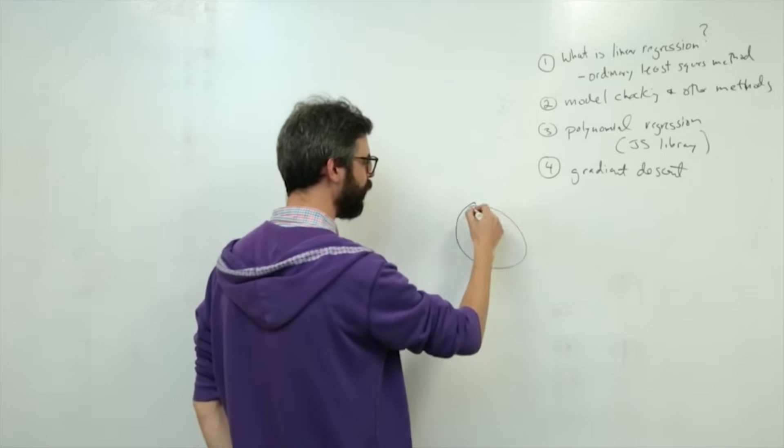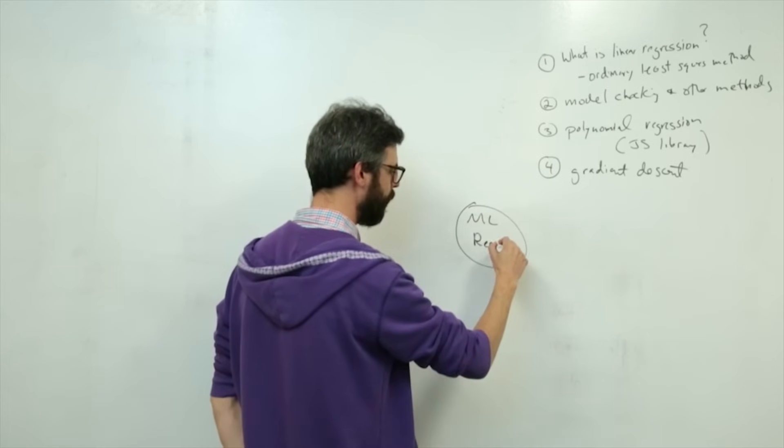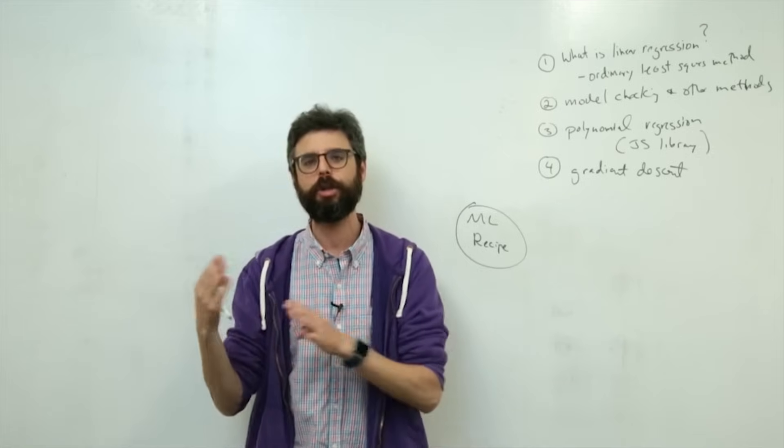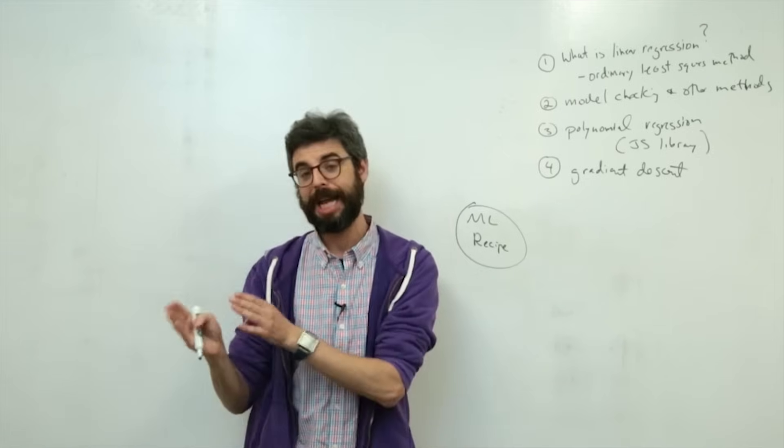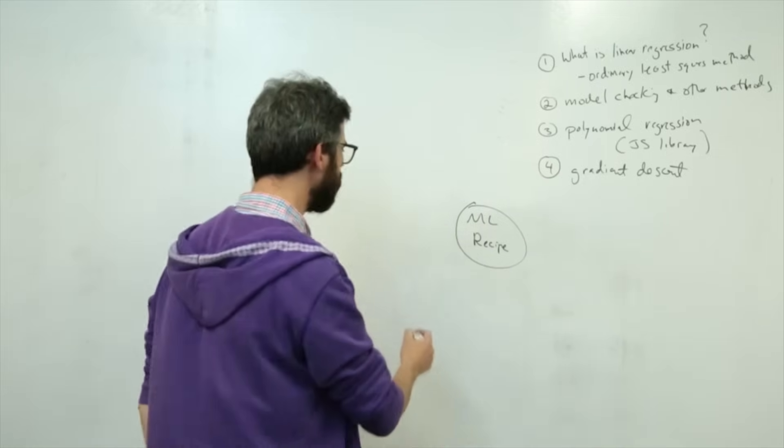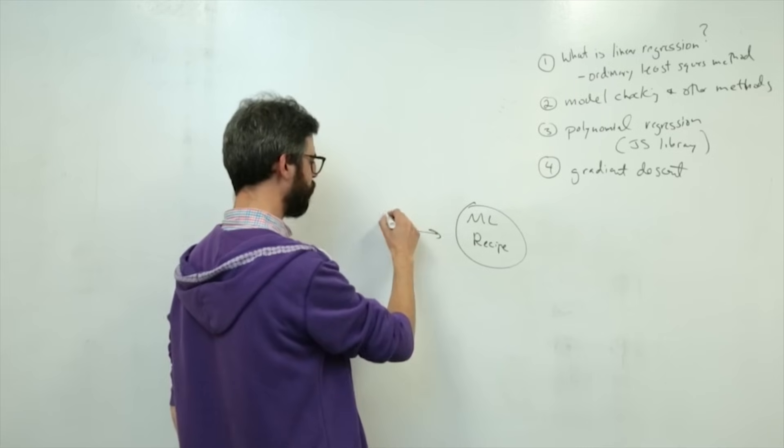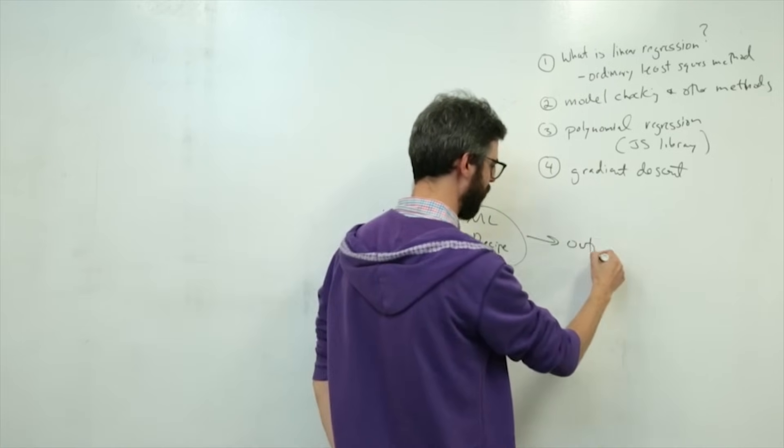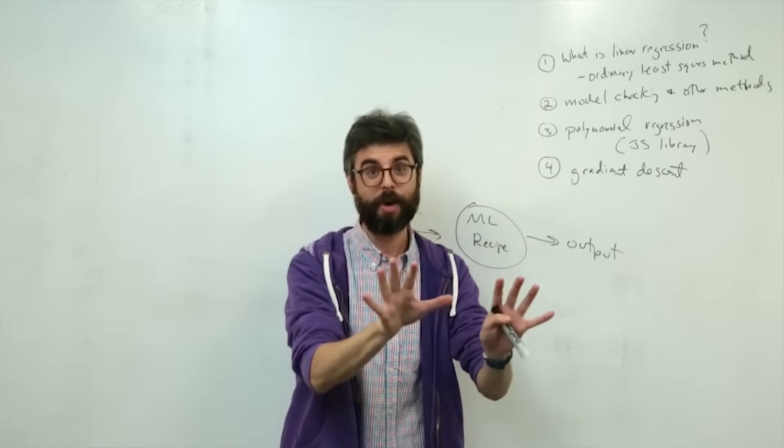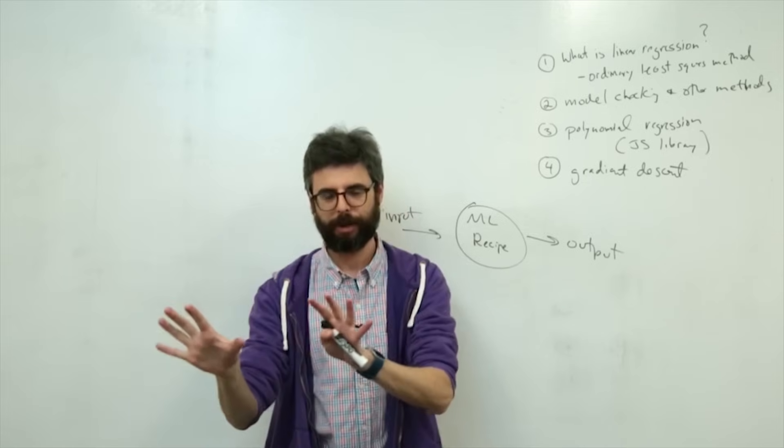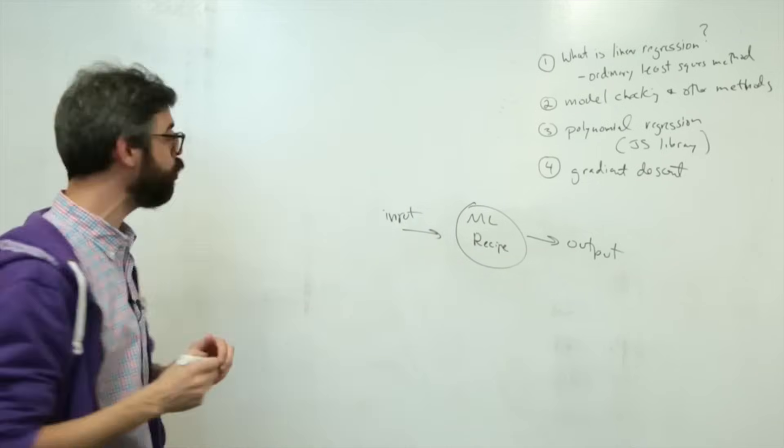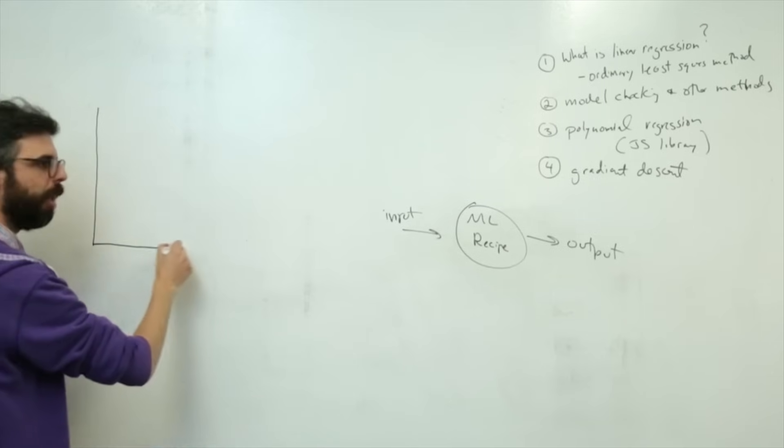So if we were to review, we have this idea of a machine learning recipe. Previously I looked at k-nearest-neighbor as a possible algorithm to make sense of input data and predict some sort of output, whether it's classifying or predicting a price. So we have some sort of input, we get some sort of output.